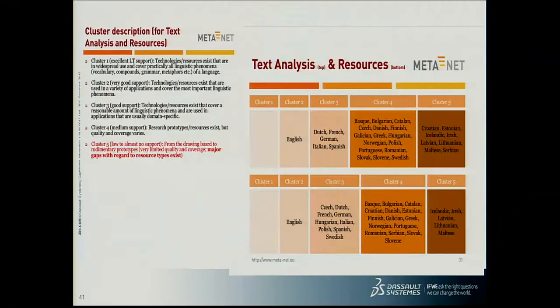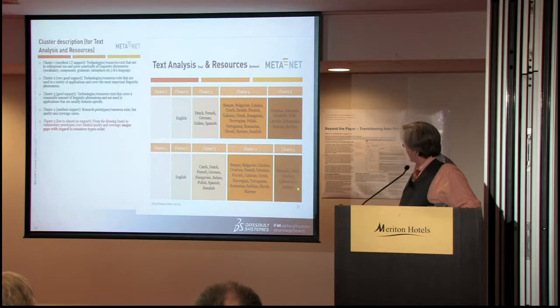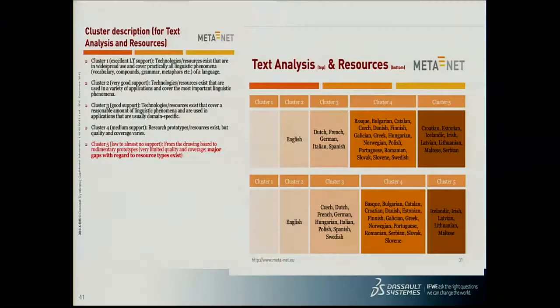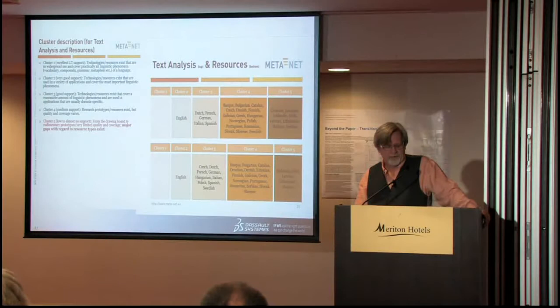Excellent language support doesn't exist for any language. Then in cluster two you have things where you don't have everything but you have a wide variety — and the only language there is English. It goes downhill from there. On the far side, you have languages with just drawing board-level or rudimentary prototypes, with major gaps in everything needed for language processing — things like Croatian, Estonian, Icelandic, Irish. This was from a few years ago, so some languages may have gotten more information since. But even in Europe, among European languages, there are lots of languages for which we don't even have rudimentary resources.